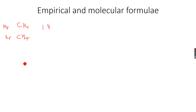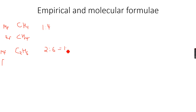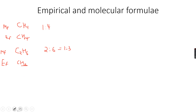If we have ethane, which is C2H6, the molecular formula is C2H6. The carbon to hydrogen ratio is 2:6, which simplifies to 1:3. So the molecular formula of ethane is C2H6, but the empirical formula is CH3.